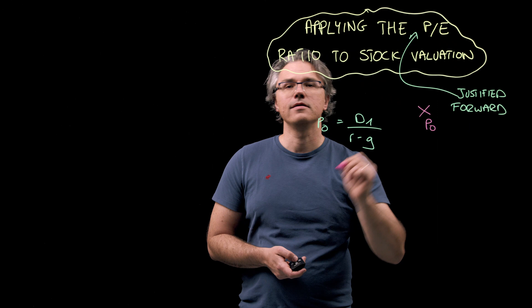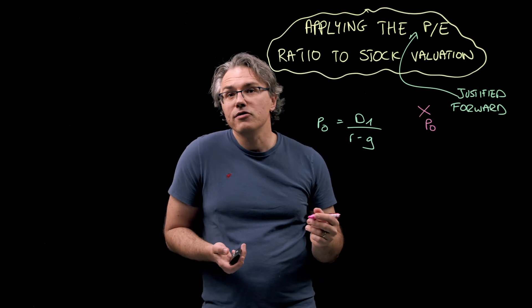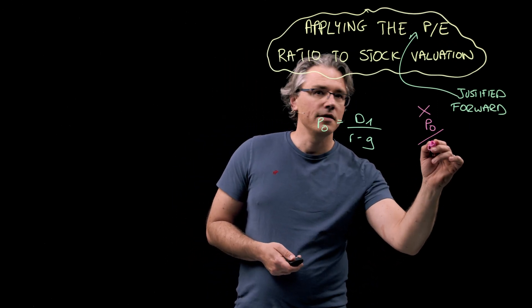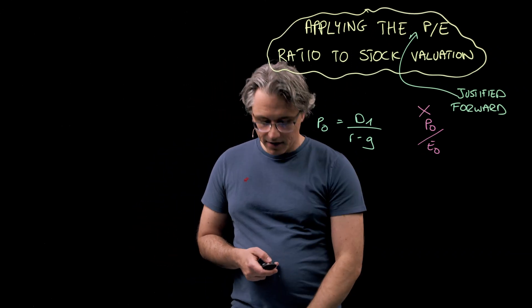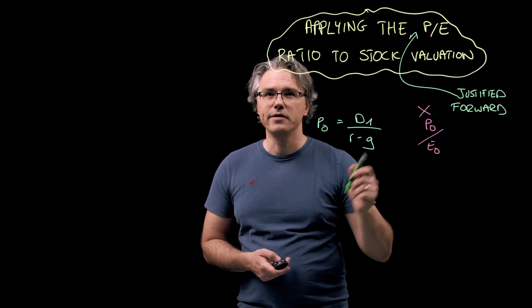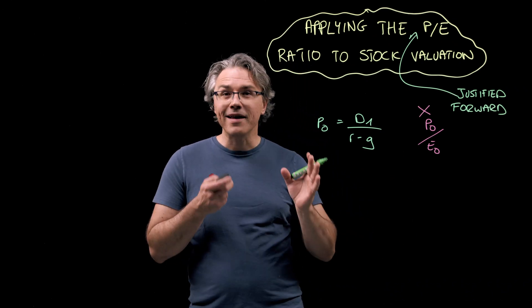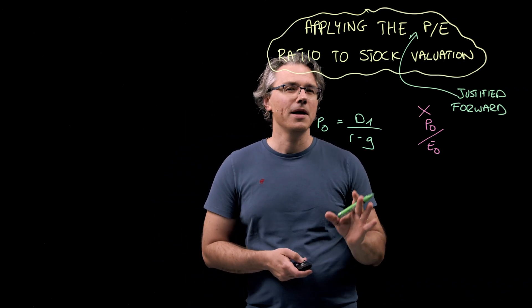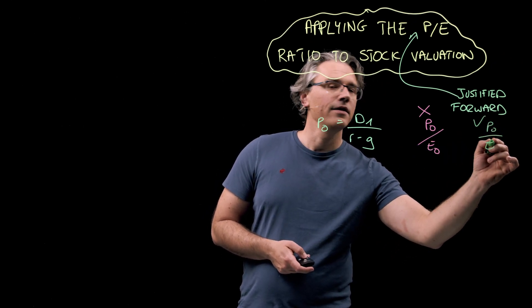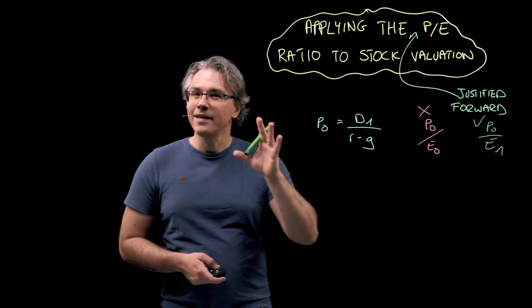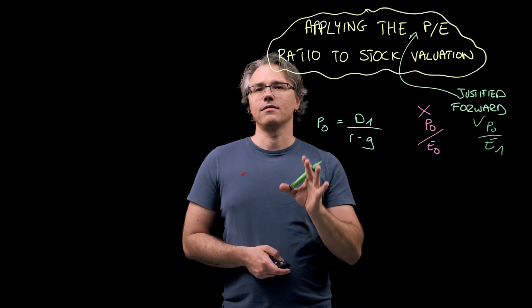i.e. P0 and the most recent earnings, so E0. In this exam, you will be asked about the justified forward price to earnings ratio, and this implies the relationship between P0 and E1. That is next year's forecast earnings.